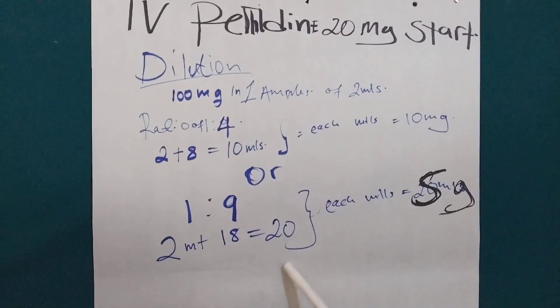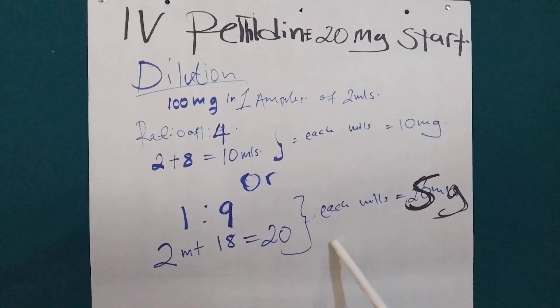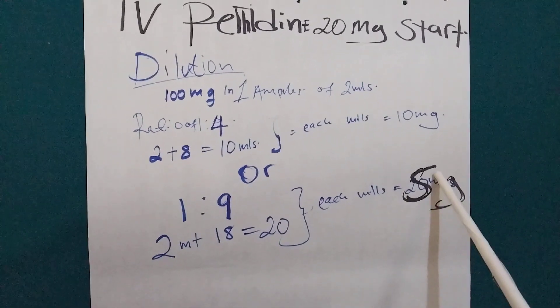So, we make 20 mL total. Then each mL will contain 5 milligrams.